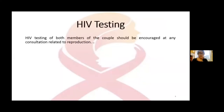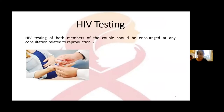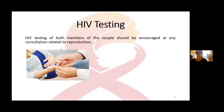HIV testing: HIV testing of both members of a couple should be encouraged at any consultation related to reproduction. For pregnant women, serological testing for HIV infection is a necessary condition for access to PMTCT — Prevention of Mother-to-Child Transmission. It must be systematically proposed during the first prenatal examination in order to detect HIV seroconversion during pregnancy. A new test is recommended at the sixth month and even at delivery.